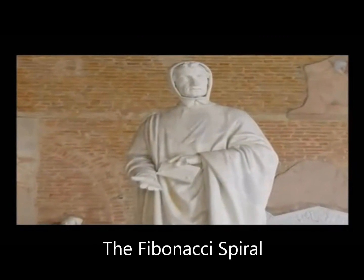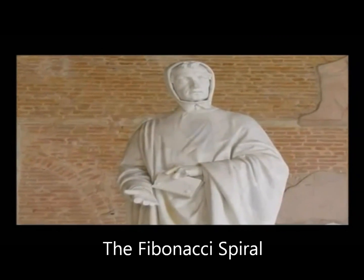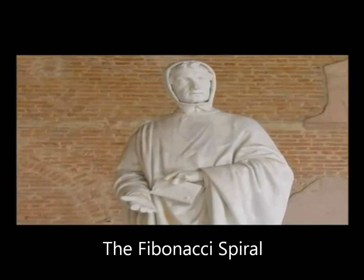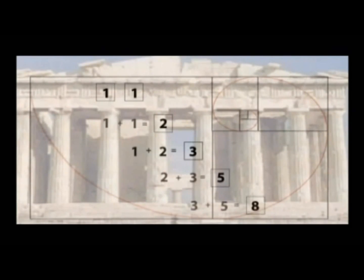In the 13th century, a mathematician named Leonardo Fibonacci discovered an important number sequence. It's a very simple sequence of numbers, starting with the number one twice. Each succeeding number in the sequence is the sum of the two preceding ones.